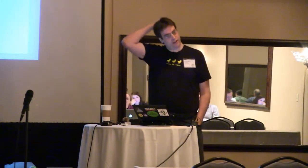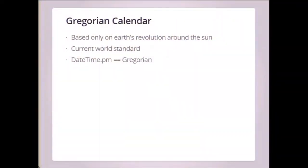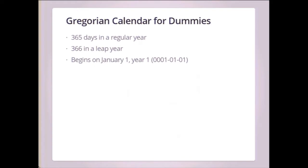Let's talk a little bit about calendars. Many of you have heard of the Gregorian calendar. This is based on the Earth's revolution around the sun. This is what we currently use in pretty much all of the world as our main calendar, and it's certainly the calendar of international communication. The DateTime.pm module implements the Gregorian calendar. There's 365 days in a year, leap years add an extra day. For the purposes of DateTime, we say it begins in year one, day one, month one. In reality, it wasn't implemented until the past couple hundred years and dates of adoption vary across different countries.